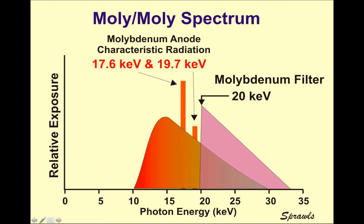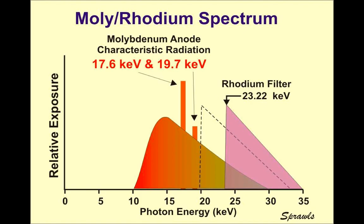Let's review this diagram. The spectrum shown has already been filtered — the lower energies are not drawn because they're essentially filtered out. We have the main spectrum, then the first characteristic energy peak, then the second characteristic energy peak. After that, this triangle shows the additional filtering performed by having a molybdenum filter.